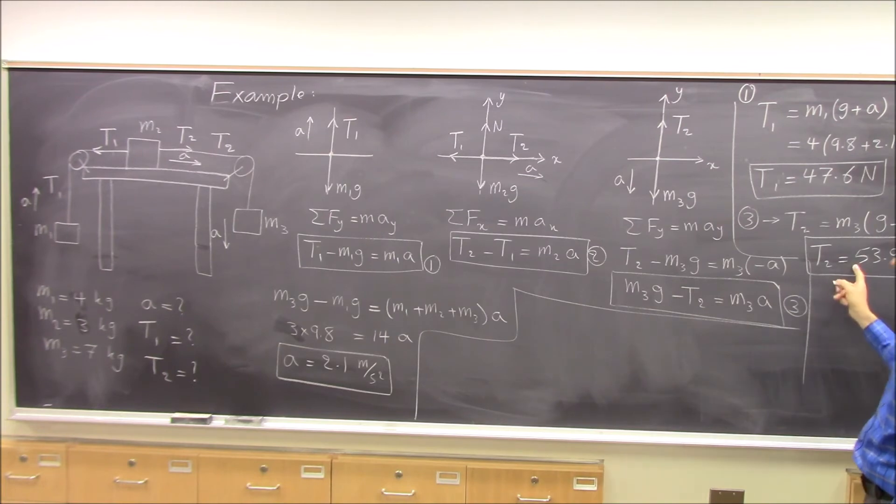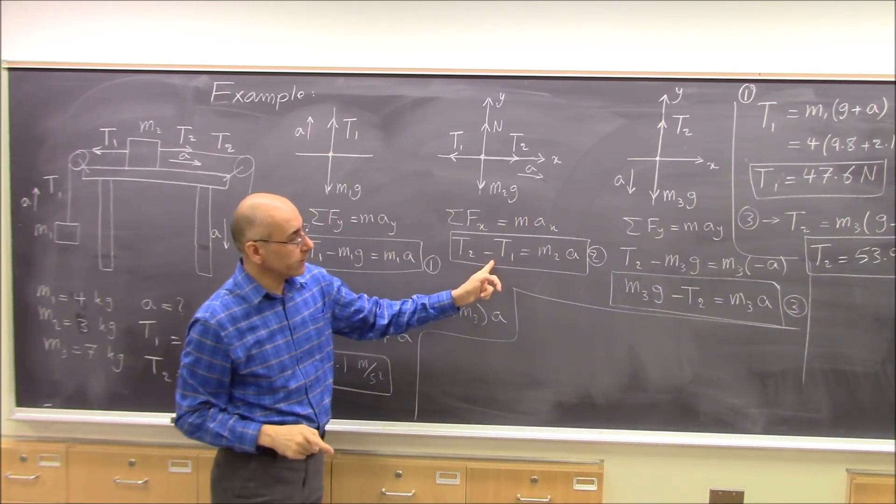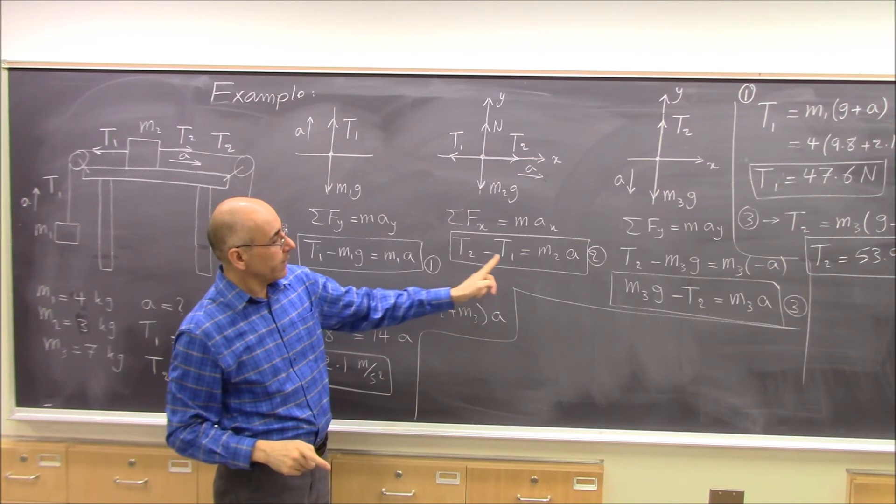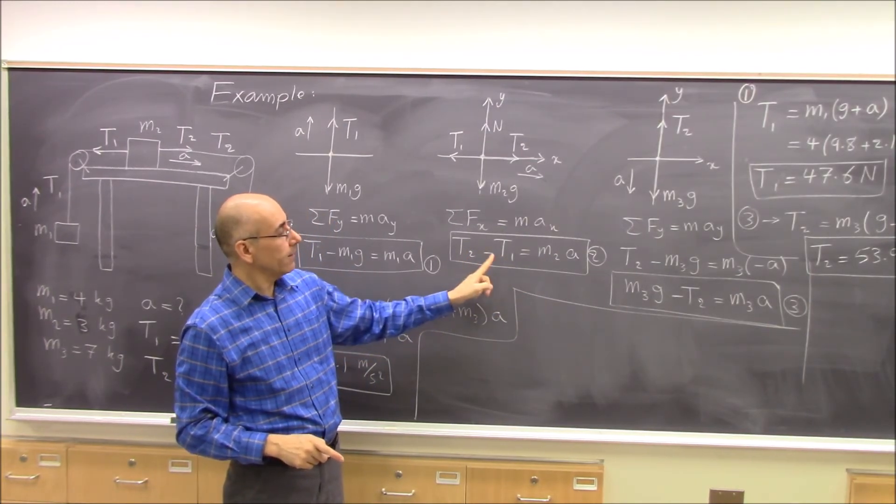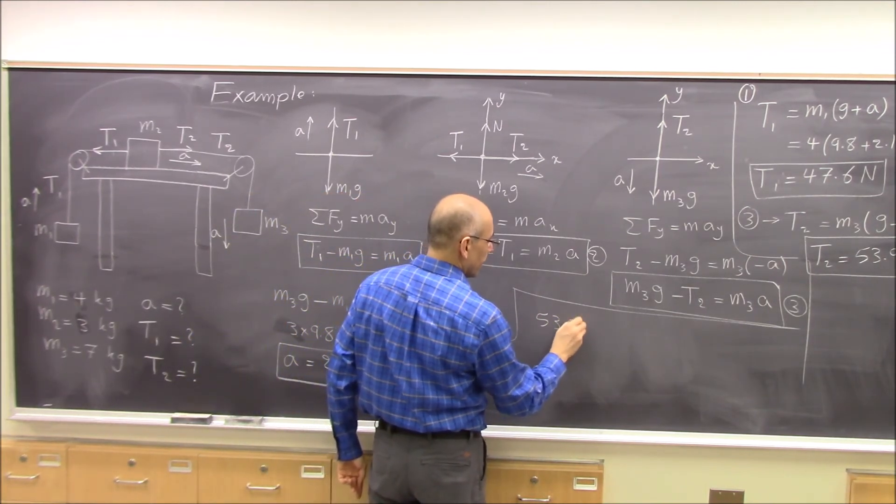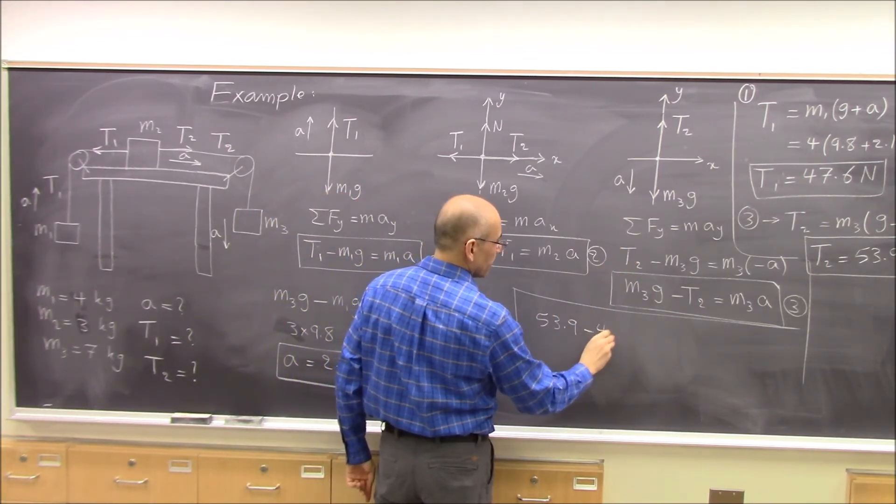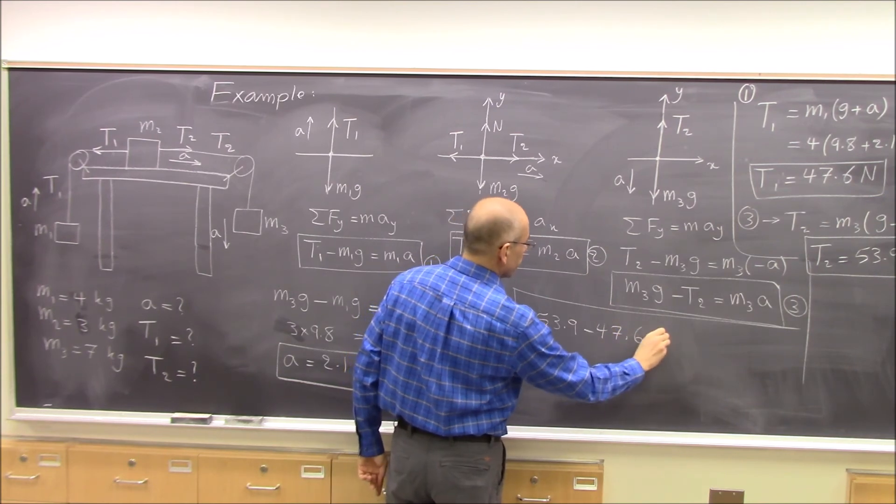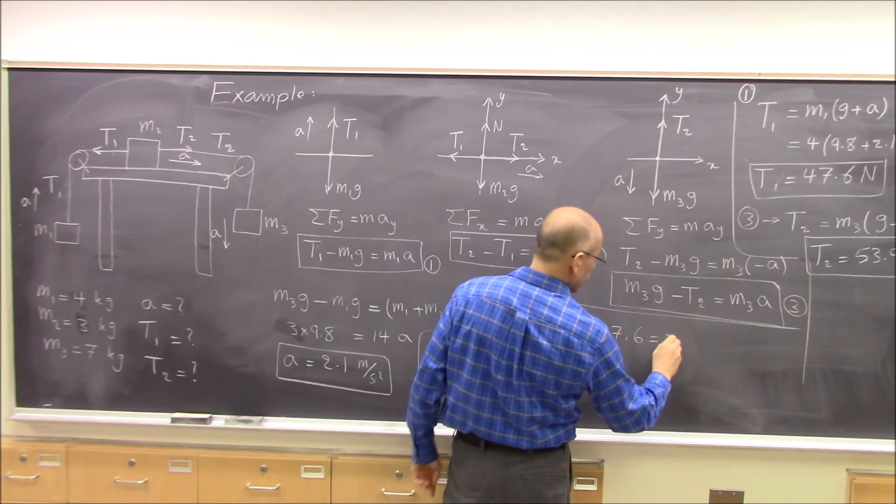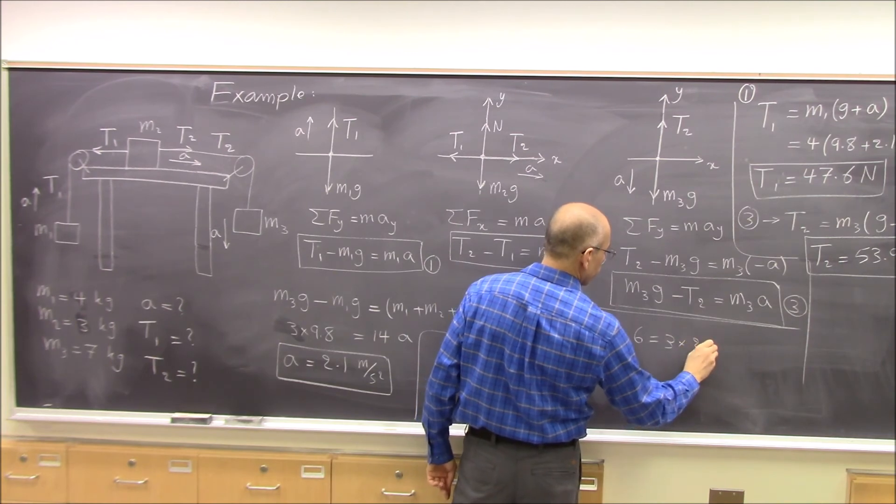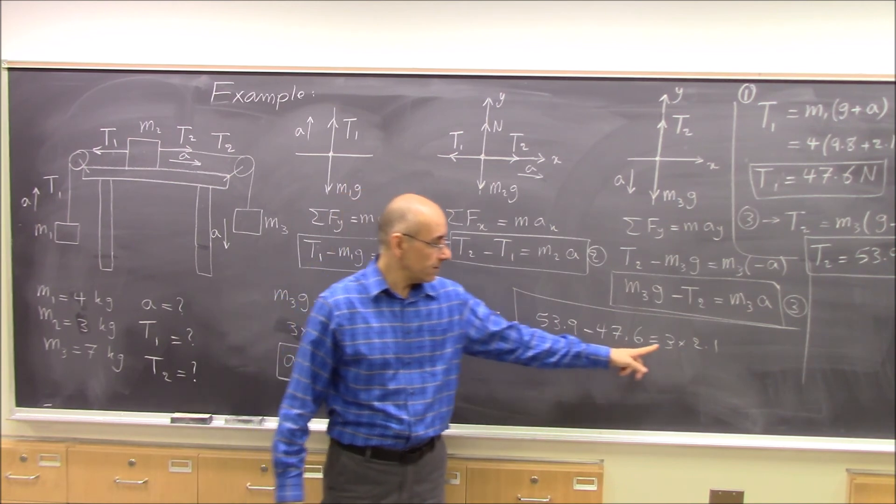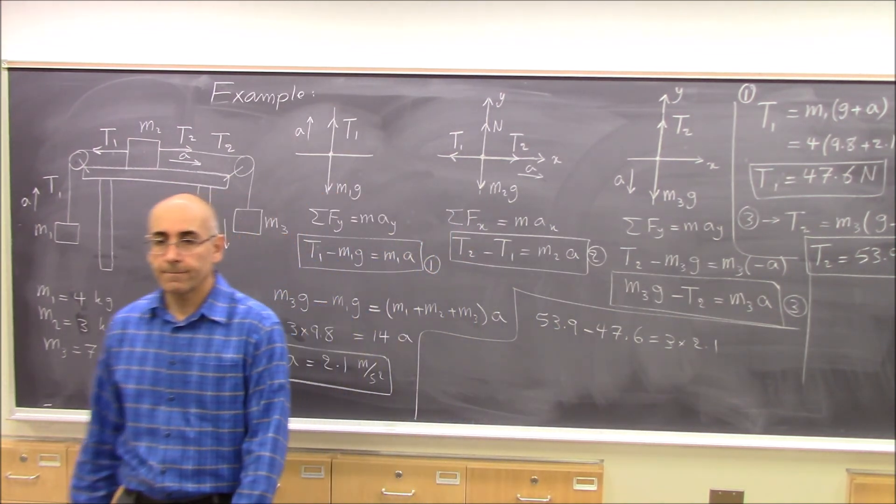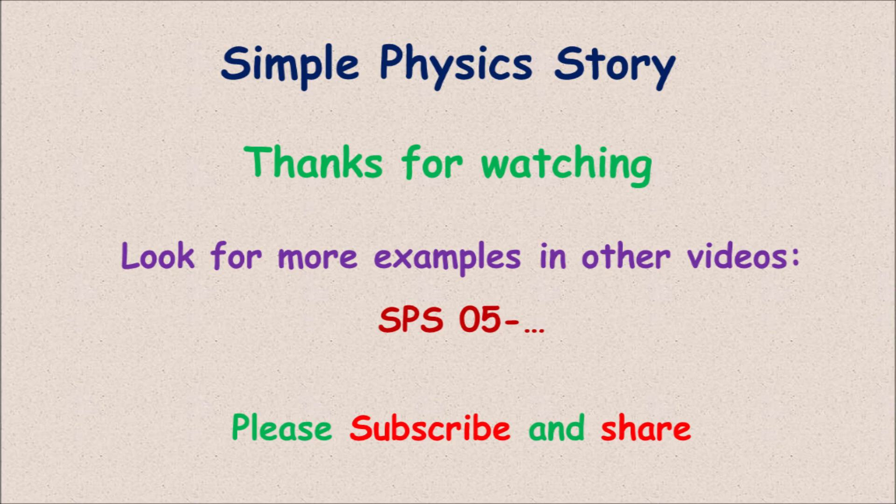And then if you check this to make sure that everything works out, t2 minus t1 should be m2 times a. t2 is 53.9 minus 47.6 should be equal to m2 which is 3 kg times 2.1. 6.3 is 3 times 2.1. You can check it out. Alright.